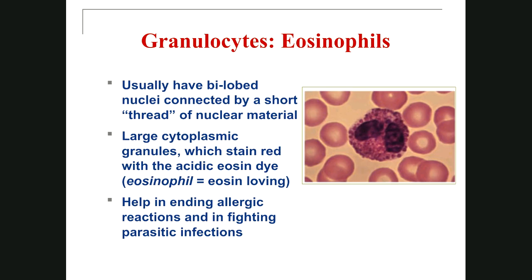The next granulocyte is called eosinophil. The eosinophil is a large cell, larger than a red blood cell. We have large, uniform-sized granules within the eosinophil, and they are eosinophilic granules — meaning they like the red-orange color from acidic dye. As you can see, the color of the granules is red. The granules usually don't cover the nucleus, so you can see the shape of the nucleus clearly. The nucleus is most often bilobed — it contains two lobes connected together by a nuclear strand.